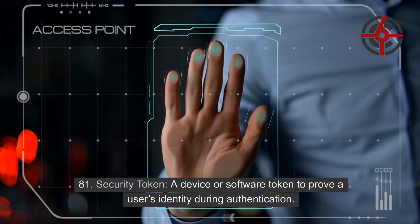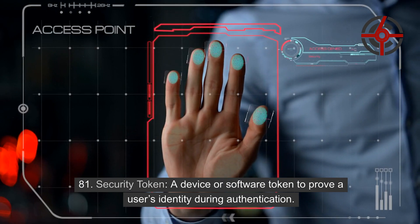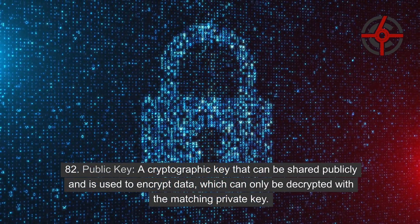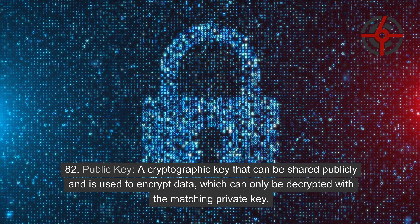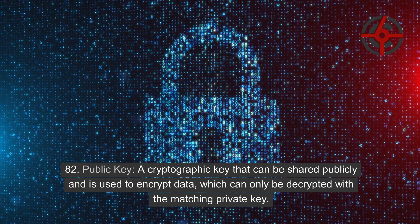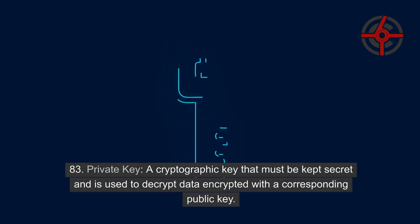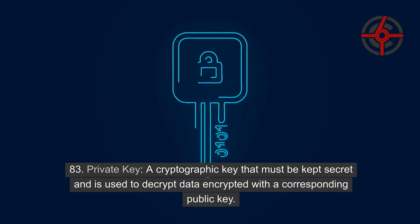81. Security Token: A device or software token used to prove a user's identity during authentication. 82. Public Key: A cryptographic key that can be shared publicly and is used to encrypt data, which can only be decrypted with the matching private key. 83. Private Key: A cryptographic key that must be kept secret and is used to decrypt data encrypted with a corresponding public key.